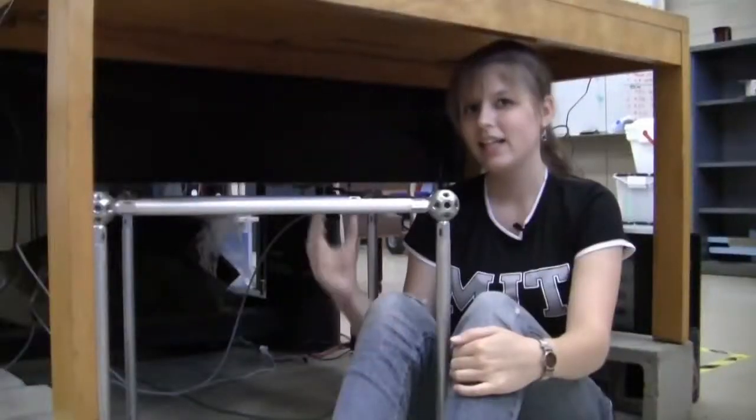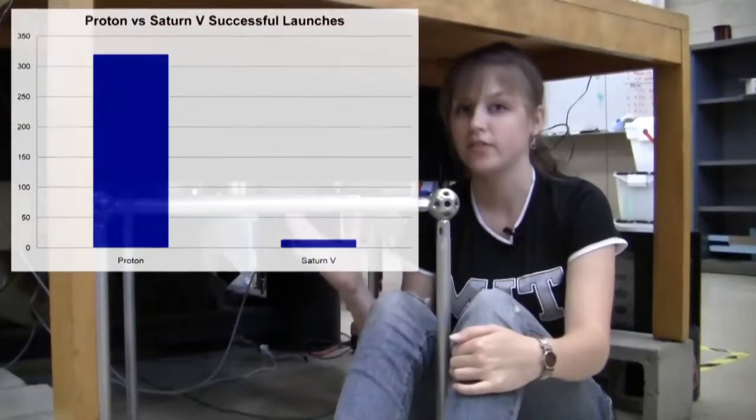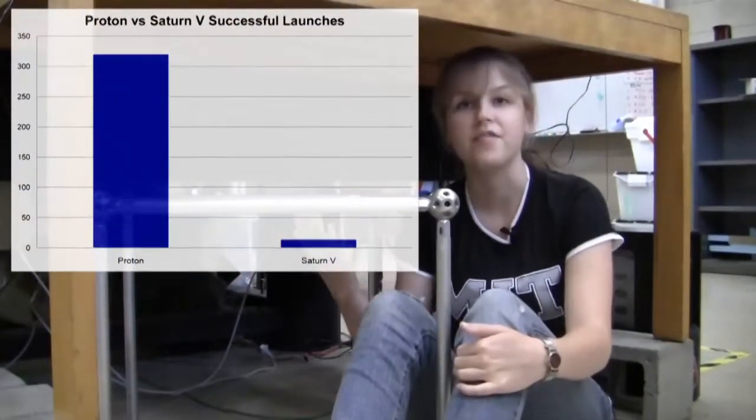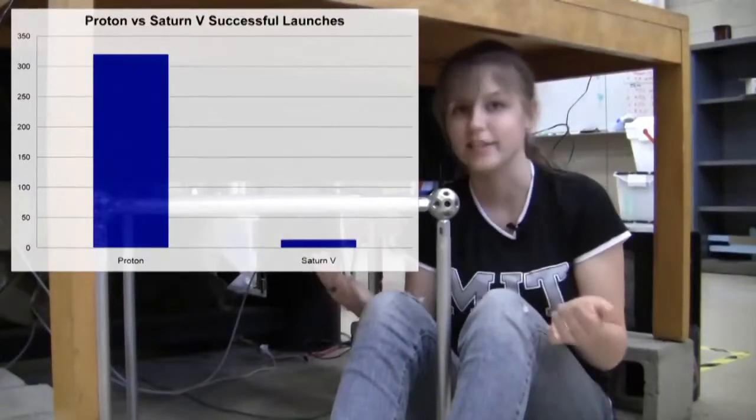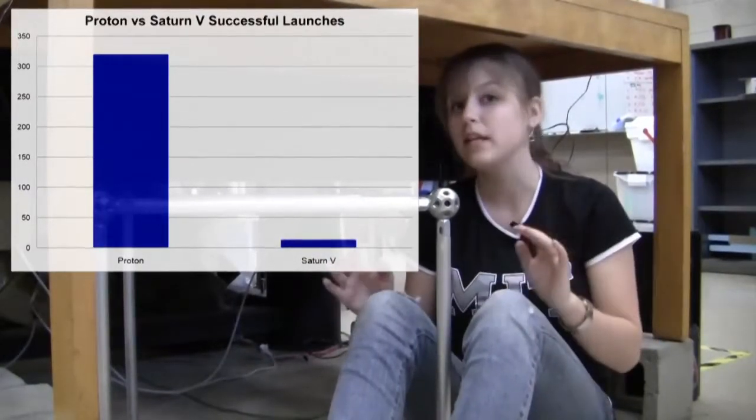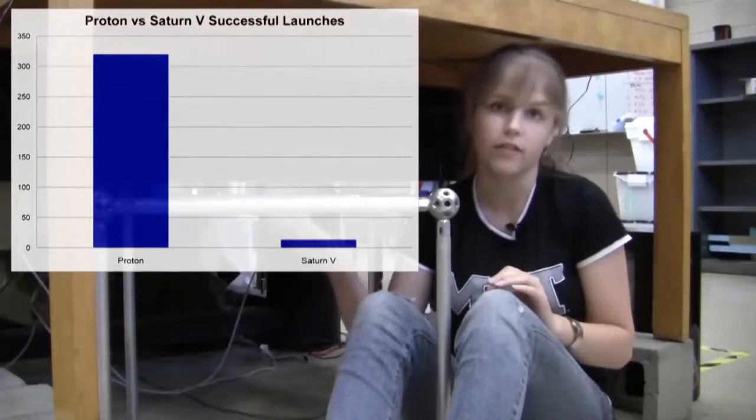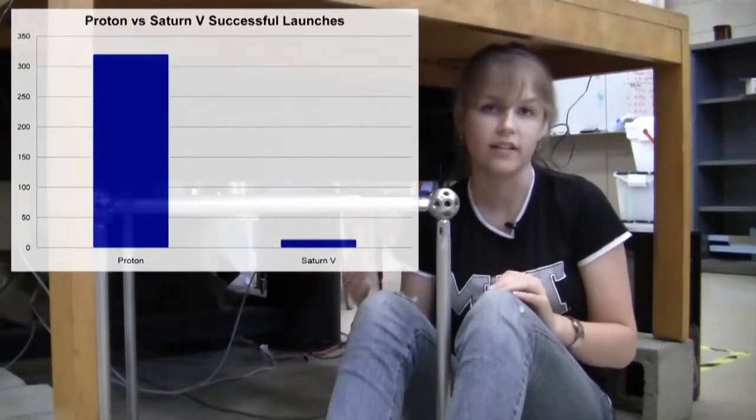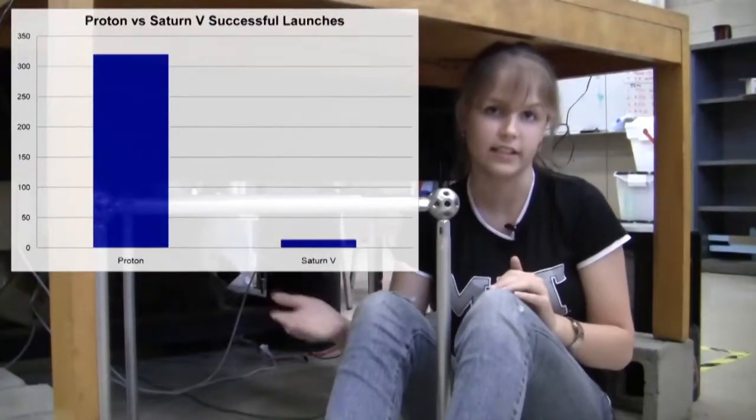Here in the Space Systems Lab, we're particularly interested in one set of data, the number of successful launches of a particular rocket. Here we see that the Proton Launch Vehicles, a family of Russian rockets that have sent ISS modules and commercial satellites into space for years, has had many more successful launches than the Saturn V, the U.S.'s moon rocket that sent men to the moon back in the 1960s and 70s.